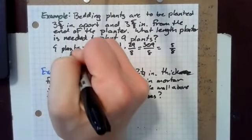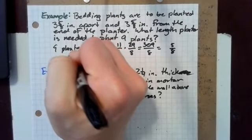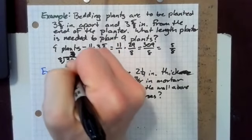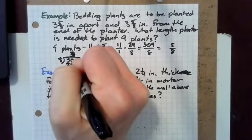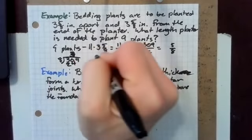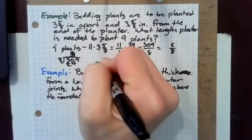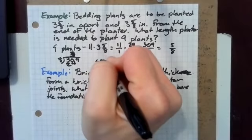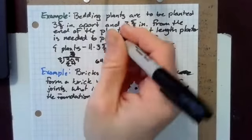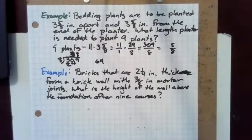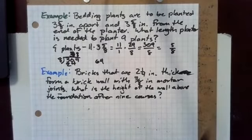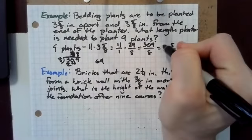Three times eight is 24. We subtract and we wind up with 64. So 64 divided by eight is eight. That's 38 and five eighths inches.